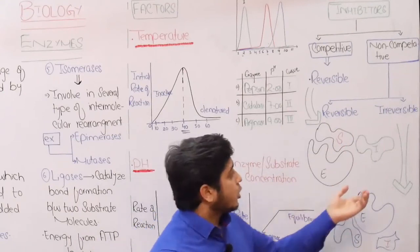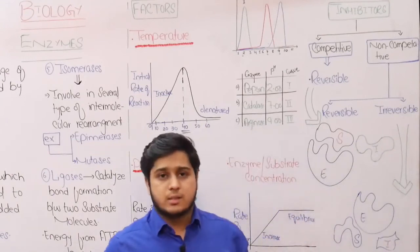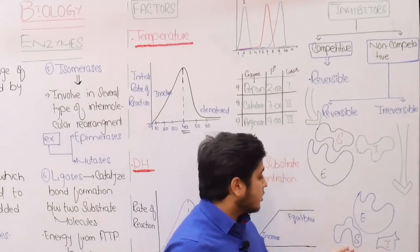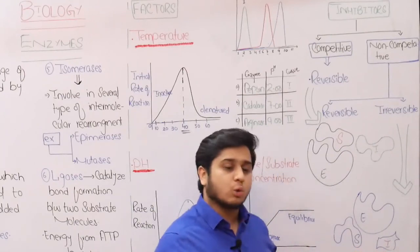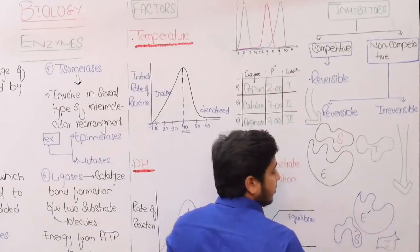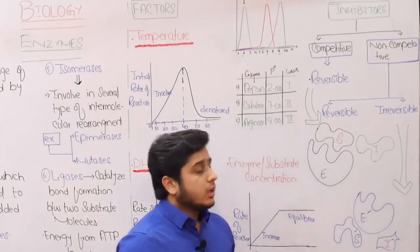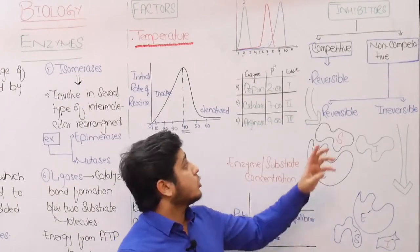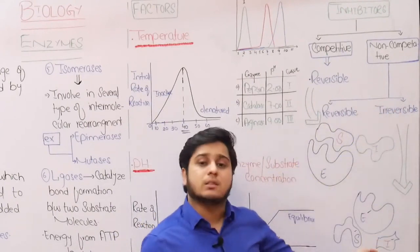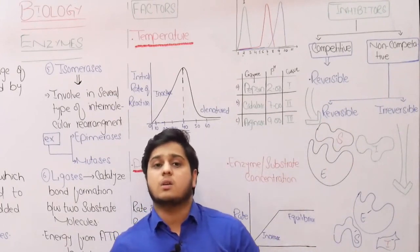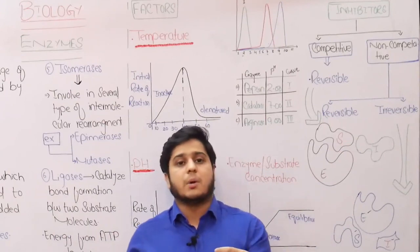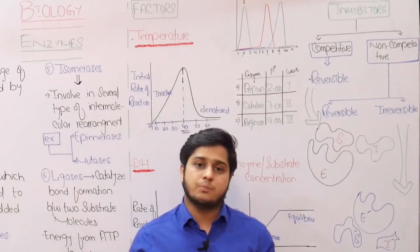Non-competitive inhibitors do not have structural similarity with the substrate molecule. Non-competitive inhibitors are further of two types: reversible and irreversible. Irreversible non-competitive inhibitors bind permanently to the enzyme, preventing enzyme-substrate complex formation. If they bind to the enzyme, the substrate will not be able to bind, ultimately blocking enzyme activity. Thank you so much.